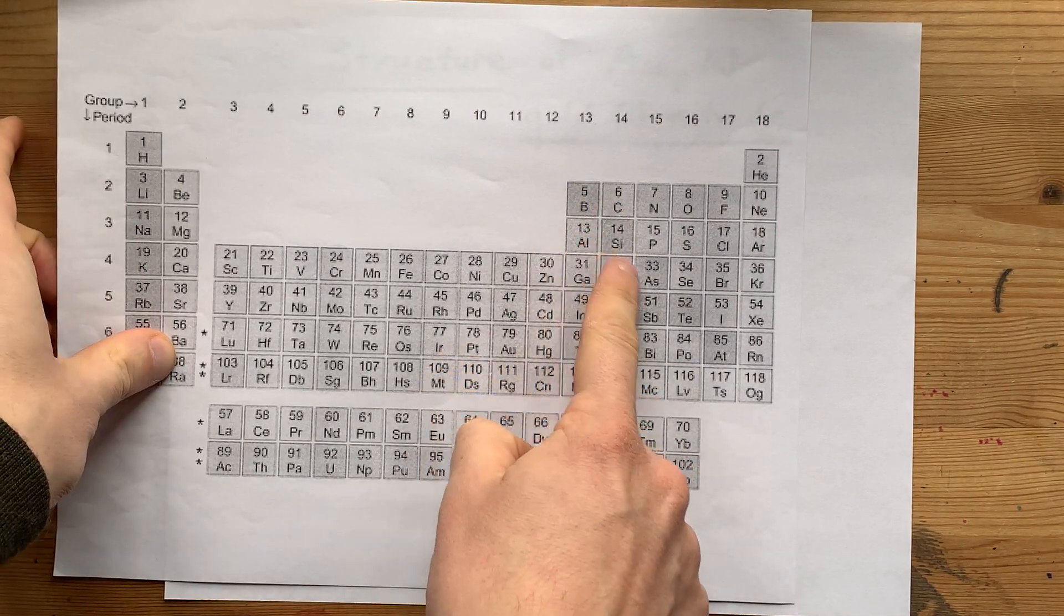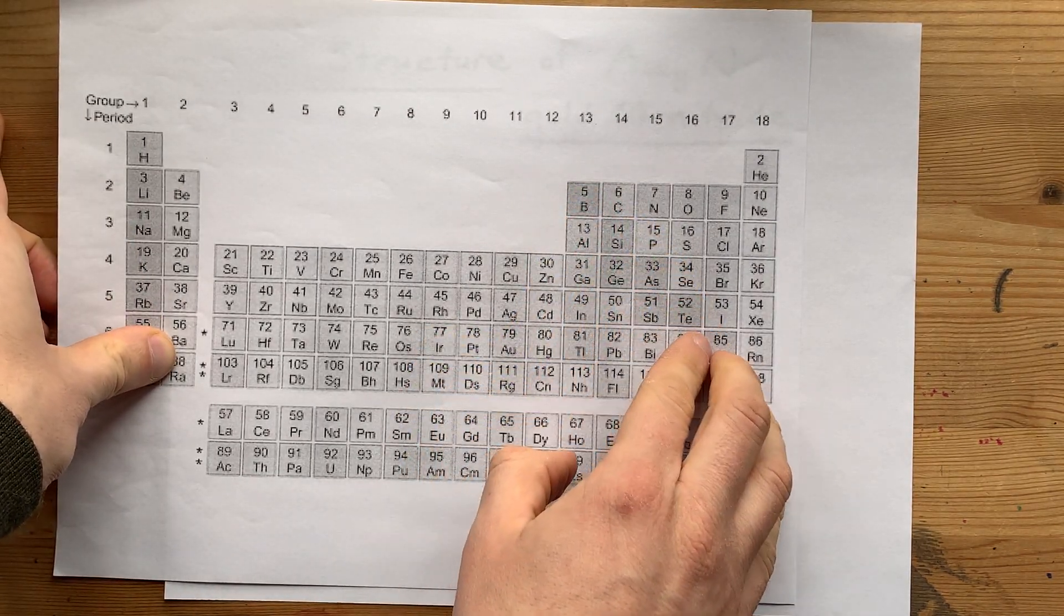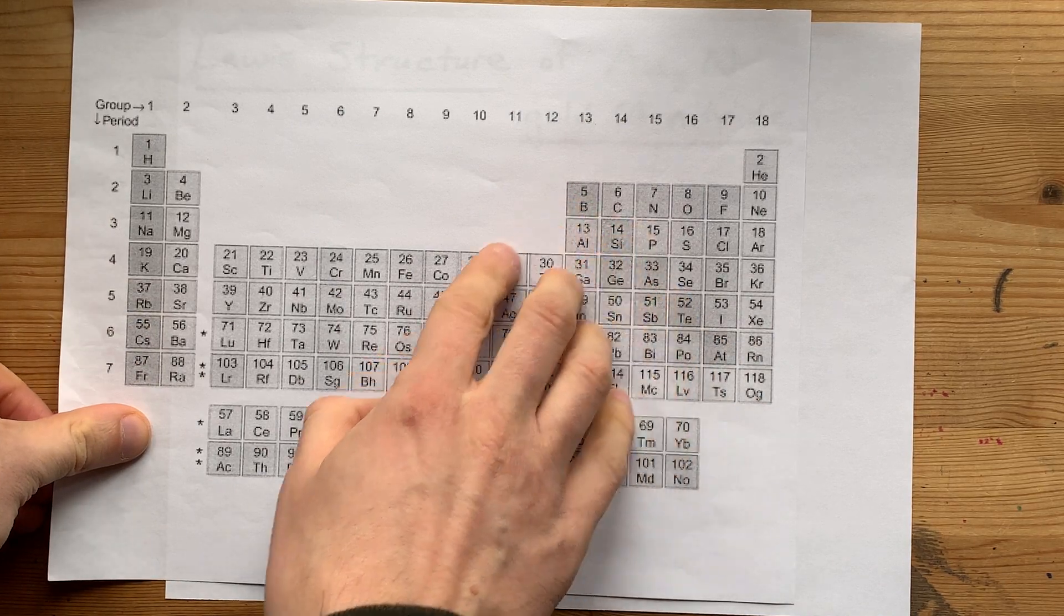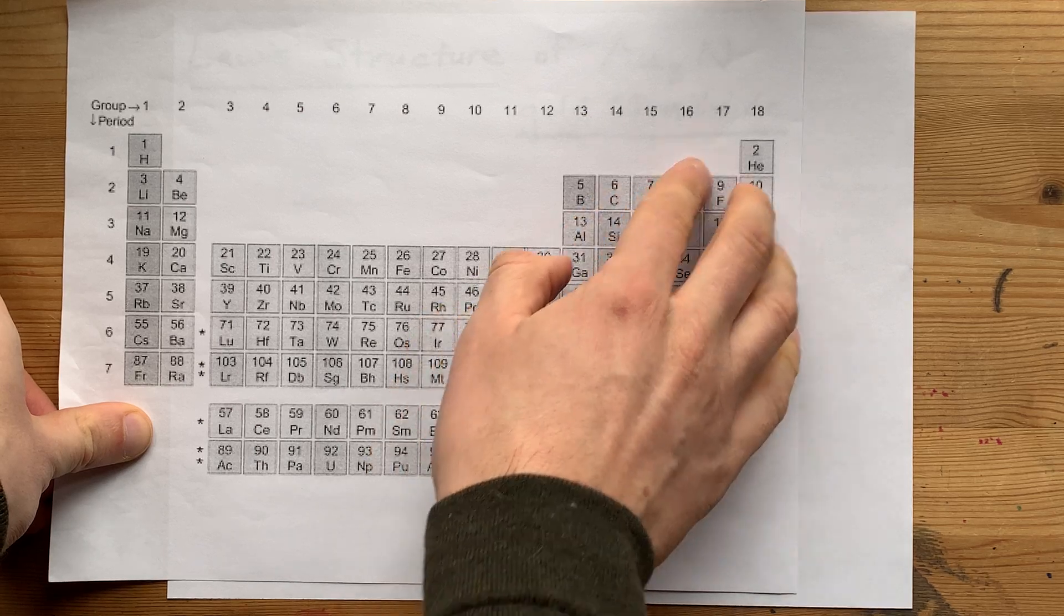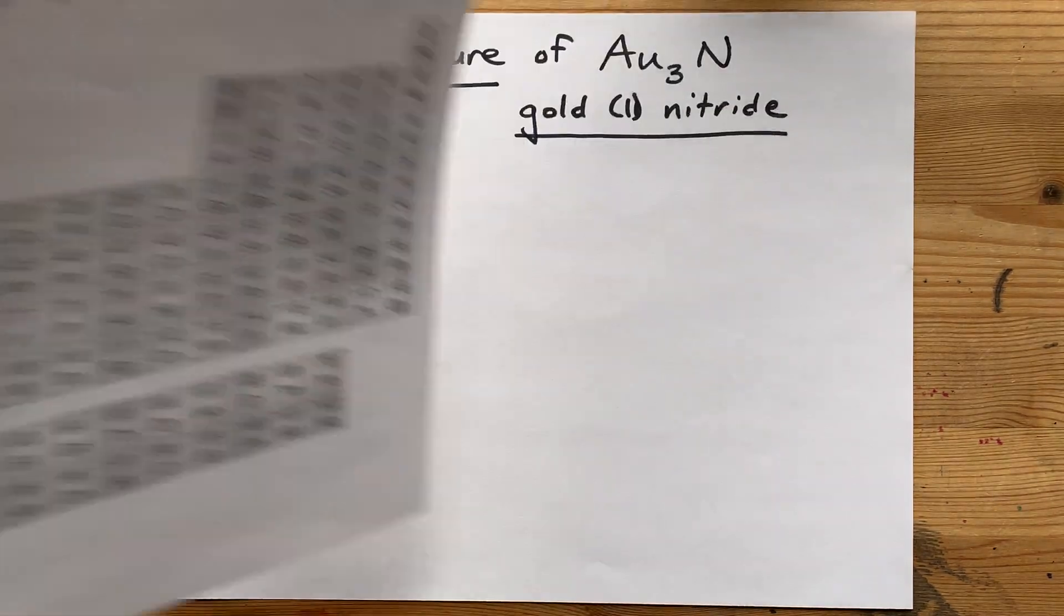Now here's the staircase of semi-metals on the periodic table. Anything to the left of it is a metal, that's gold. Anything to the right of it is a non-metal, that's nitrogen.